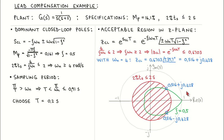We have previously seen that the constant damping curves in the z-plane are spirals, and the curve corresponding to a damping of 0.5 is shown in green. The acceptable poles are therefore located on the part of the green curve that also lies within the red circle. We choose closed loop poles that just meet the specifications, that is, their natural frequency is 4 radians per second. We can now calculate the location of the desired closed loop poles to be 0.516 plus or minus j 0.428.